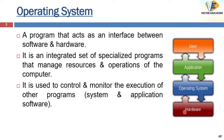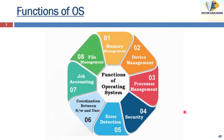An operating system performs basic tasks like file management, memory management, process management, handling input and output, and controlling peripheral devices such as printers and hard disks. Let us briefly learn about these functions.